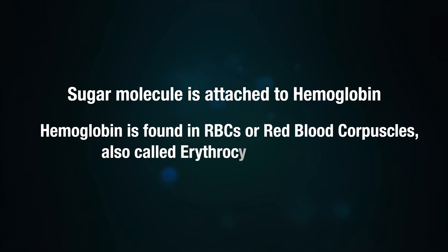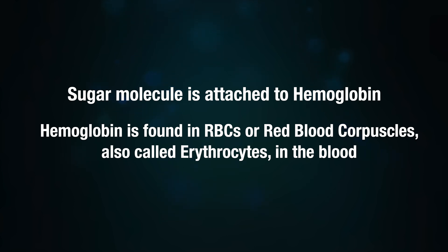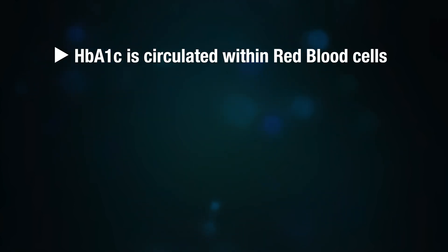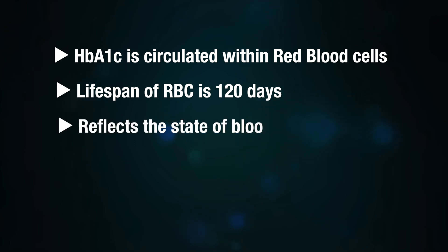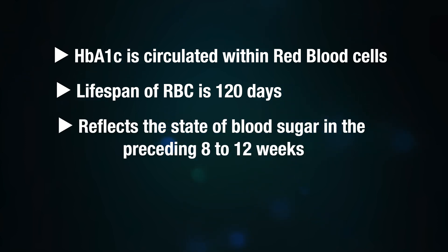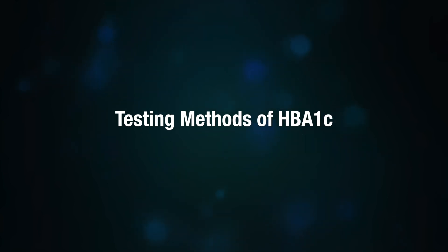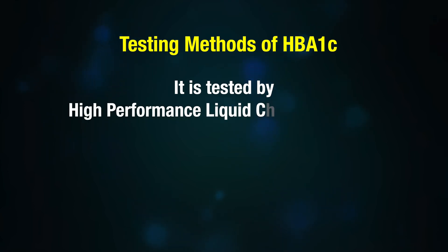Hemoglobin is found in red blood cells, also called erythrocytes. As HbA1c circulates within red blood cells, whose lifespan is around 120 days, it generally reflects the state of blood sugar in the preceding 8 to 12 weeks, thereby helping to assess glycemic control or to diagnose diabetes.